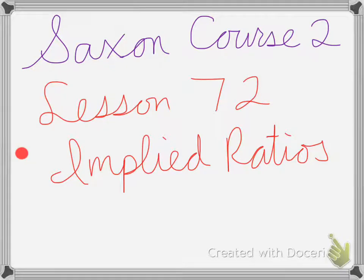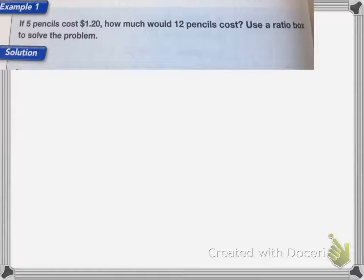Saxon Course 2, Lesson 72, is on Implied Ratios. If 5 pencils cost $1.20, how much would 12 pencils cost? Use a ratio box to solve the problem. First, we're going to draw a ratio box.